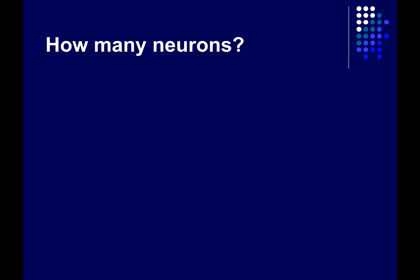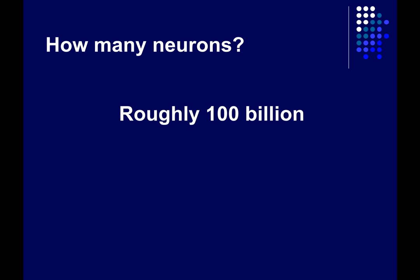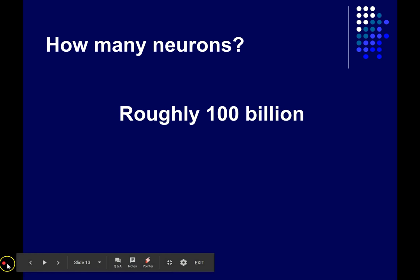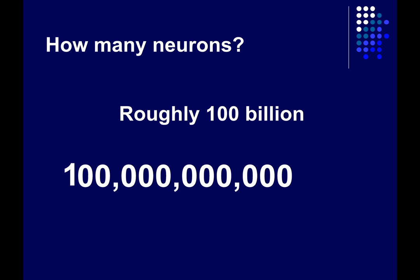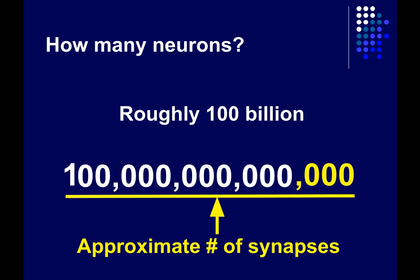So how many neurons are we talking about? In the human nervous system, there are roughly 100 billion neurons — a huge number. And each one of these neurons is connected, usually through chemical communication, with roughly 1,000 to 10,000 other neurons. So on the low end, we can estimate there are roughly 100 trillion synapses — points of communication between neurons — in the human nervous system.